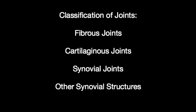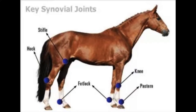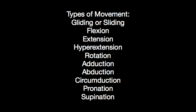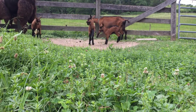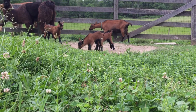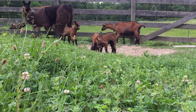Synovial joints are the most common and most movable joints in a mammal's body. These joints are made up of articular surfaces, articular cartilage, articular cavities, joint capsules, and ligaments. Depending upon the structure of the joint, different types of movement can occur between the two articulated bones. Many of these movements can be seen in this video.